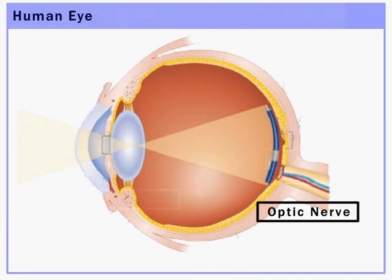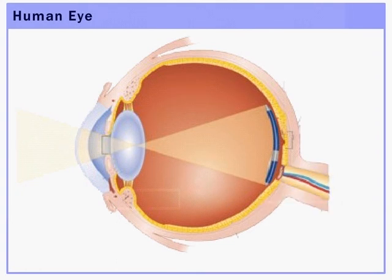The last one is the optic nerve, which sends electric signals to the brain. The brain interprets these signals and finally processes the information so that we perceive objects as they are.